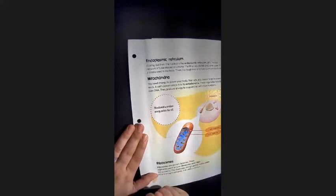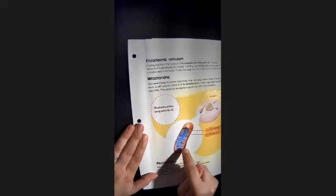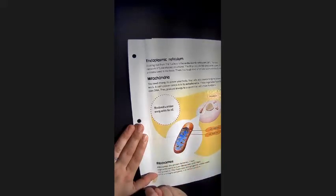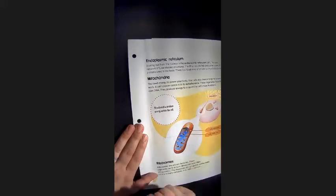Here is our mitochondria. It has an outer membrane and an inner membrane. There's multiple mitochondria, as you can see, inside the cell.